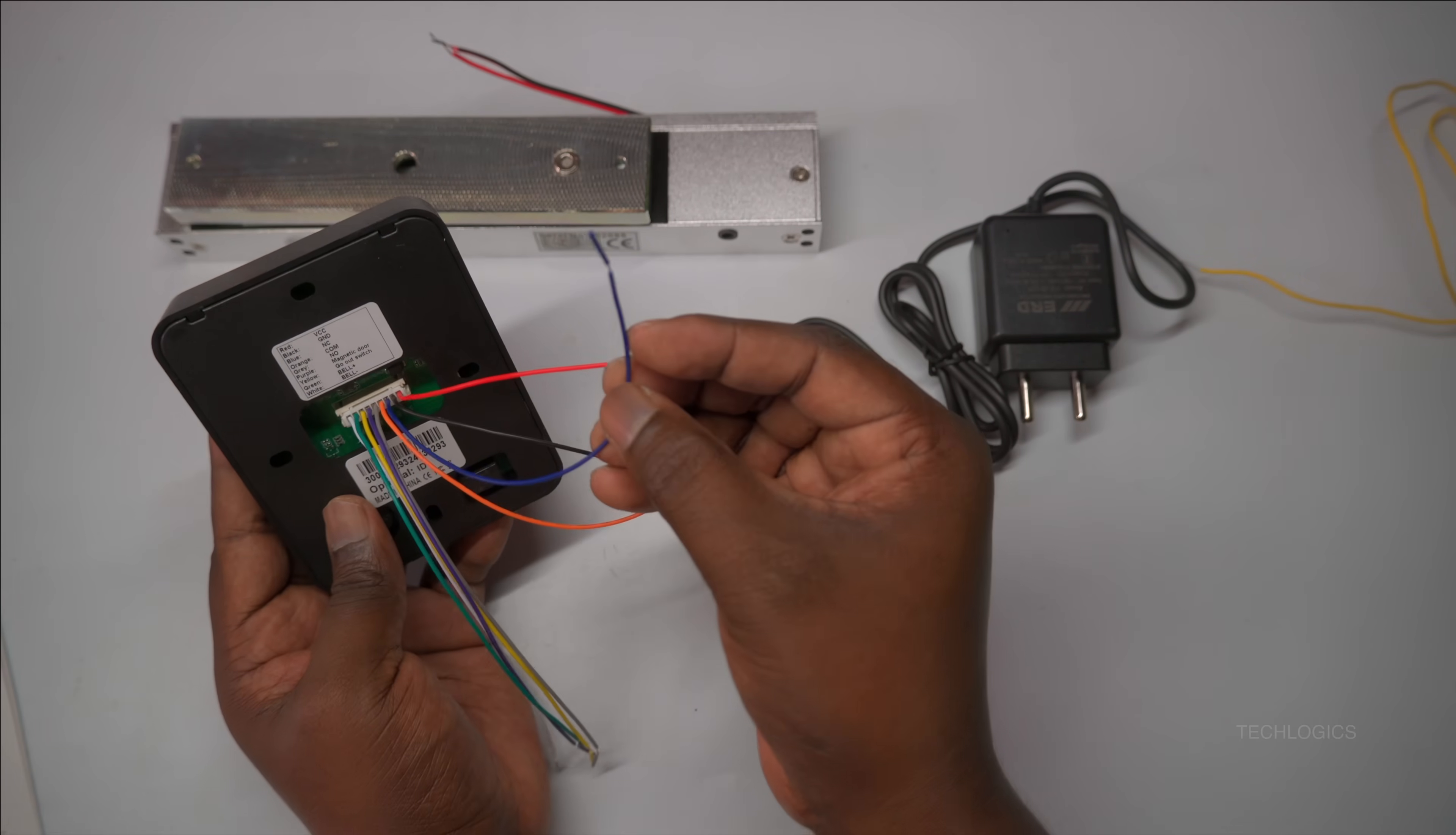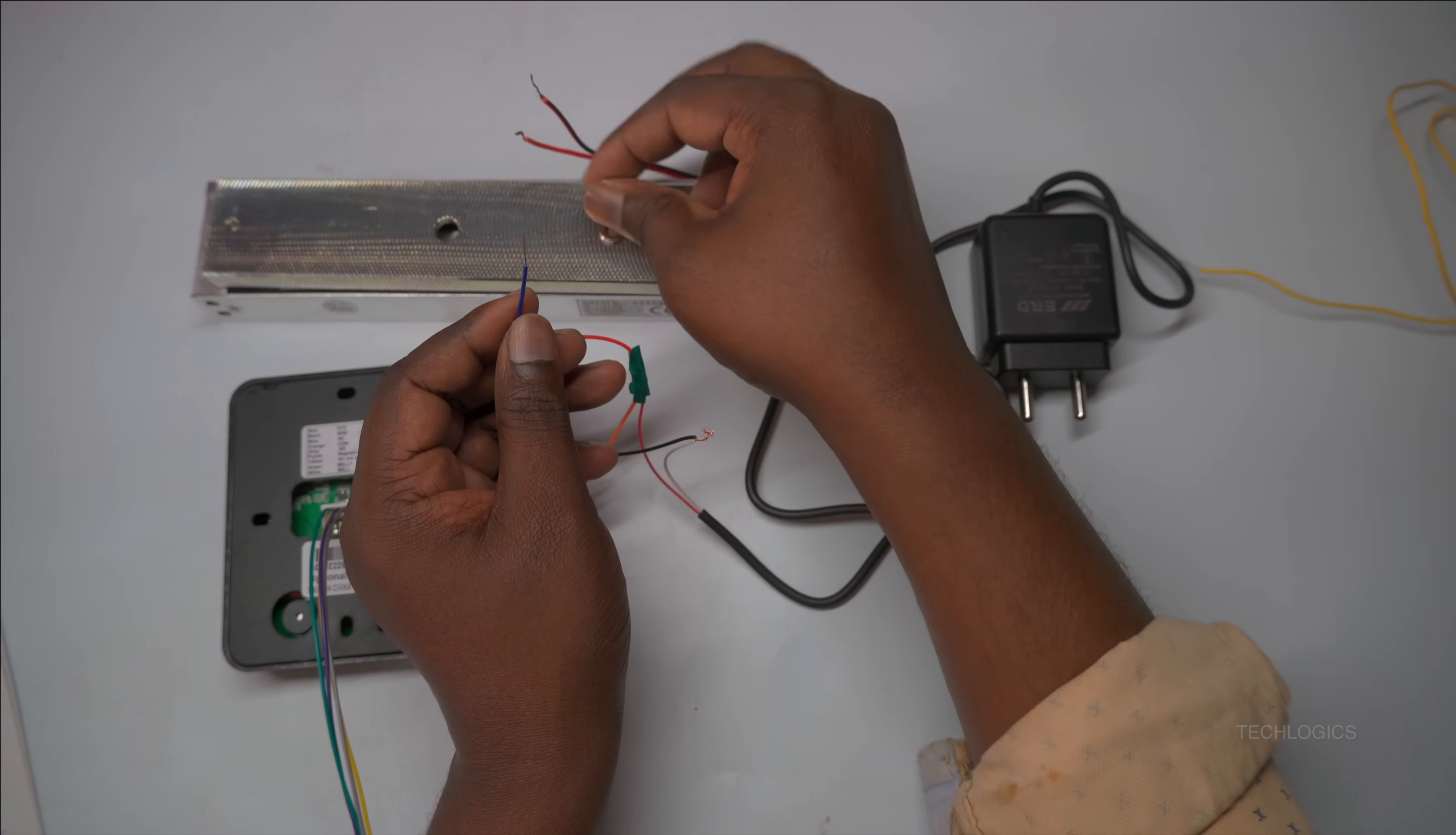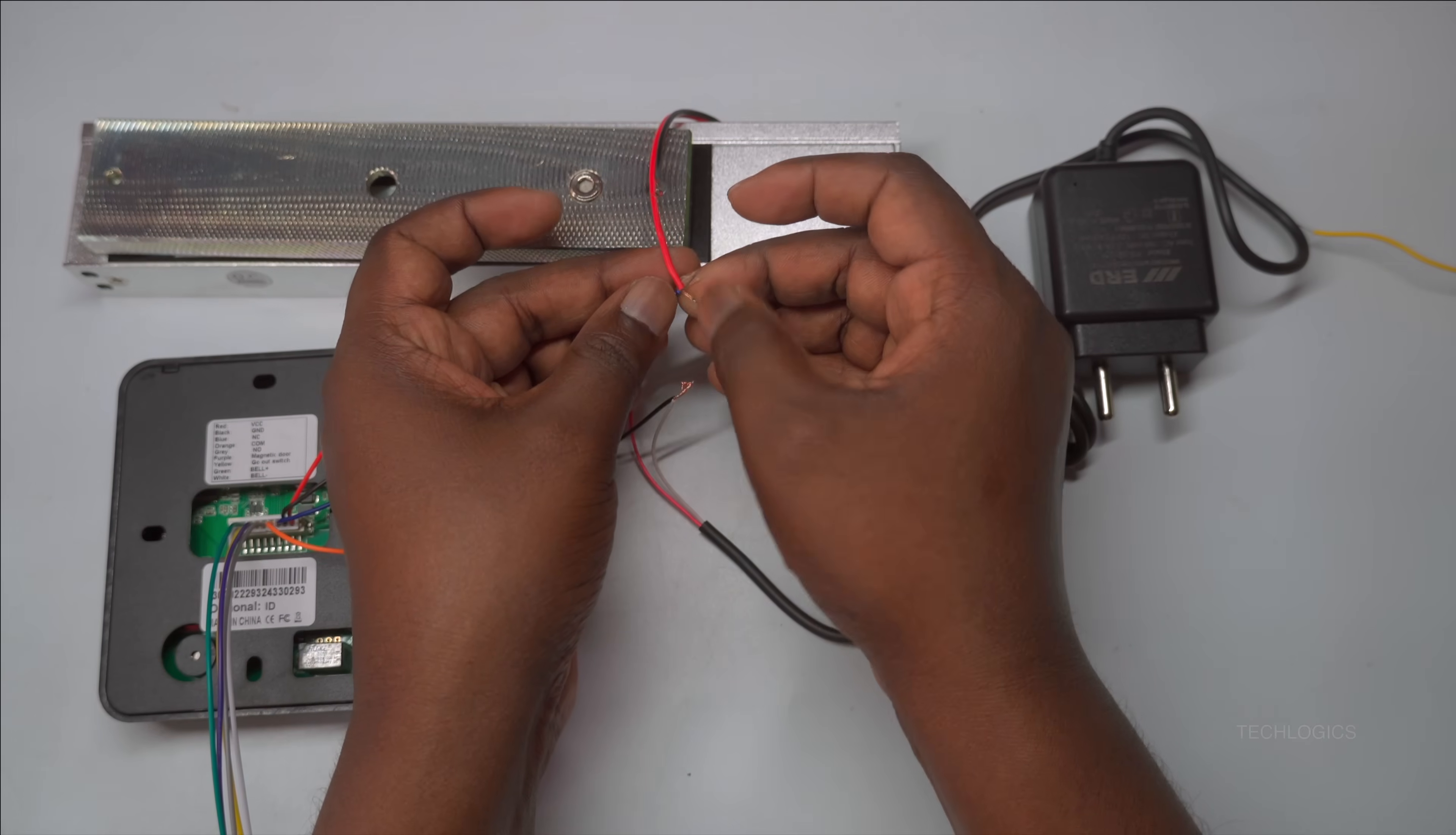Next, connect the positive terminal of the electromagnetic lock to the NC (normally closed) terminal of the access controller. The NC contact means that power is normally supplied to the lock, keeping it engaged by default. When a user gains access or presses the exit switch, the controller temporarily disconnects the power, causing the lock to release for a few seconds.